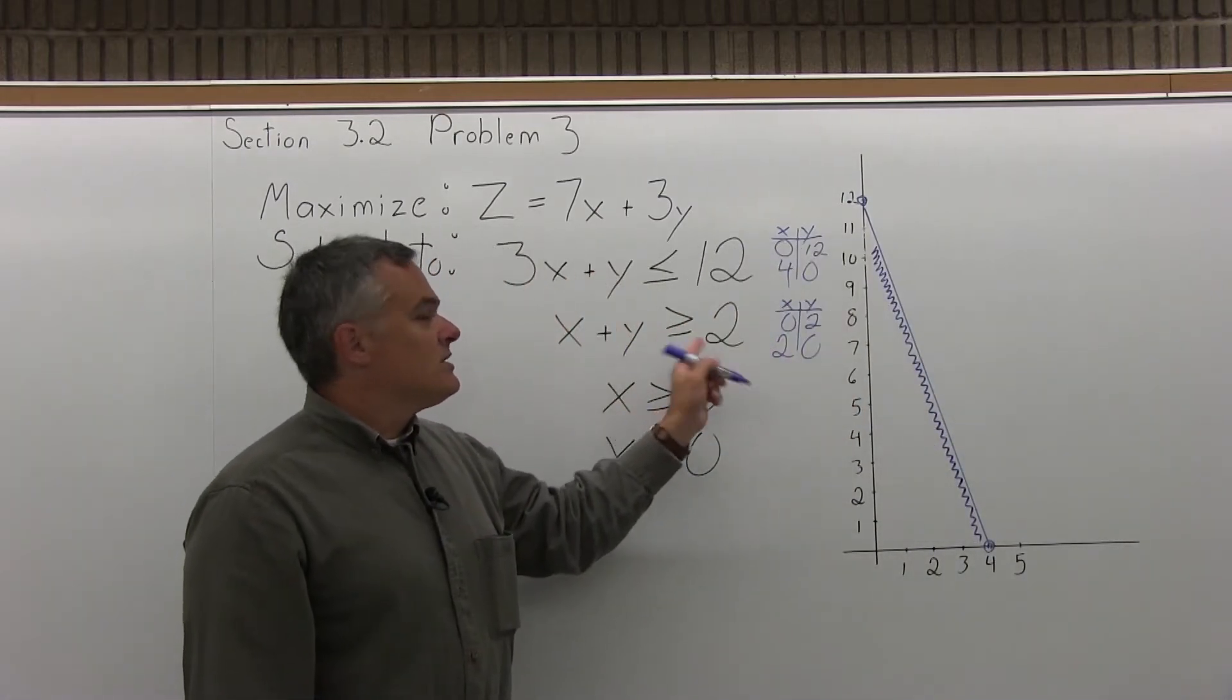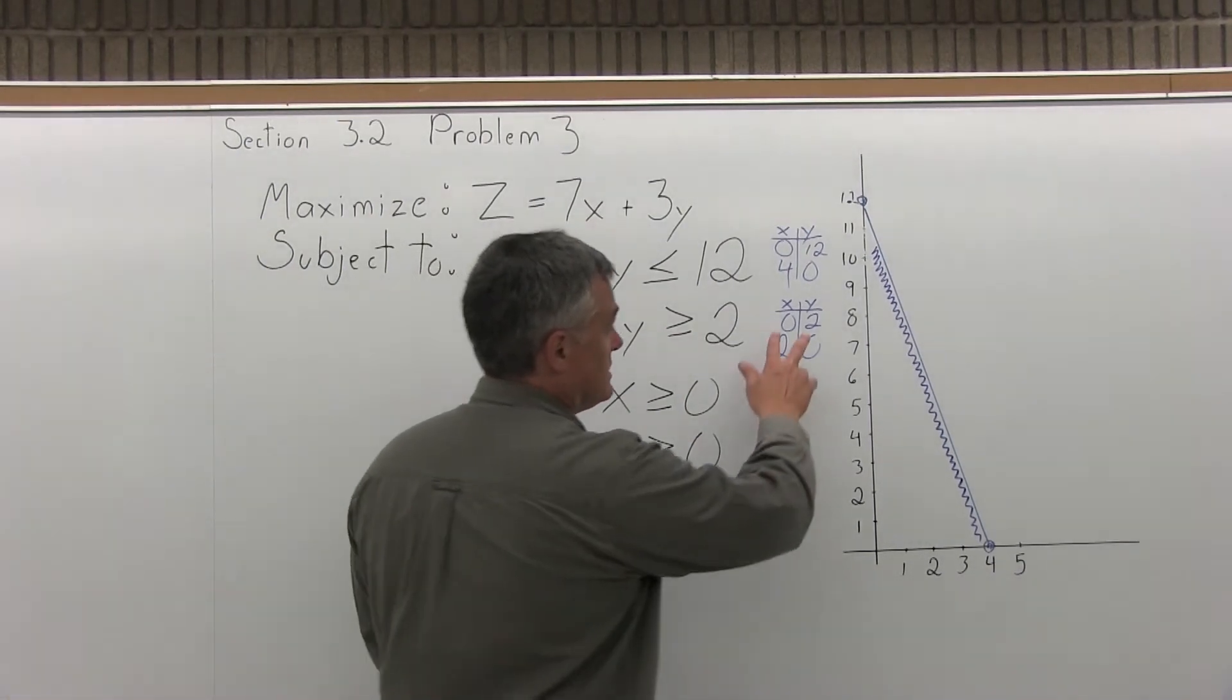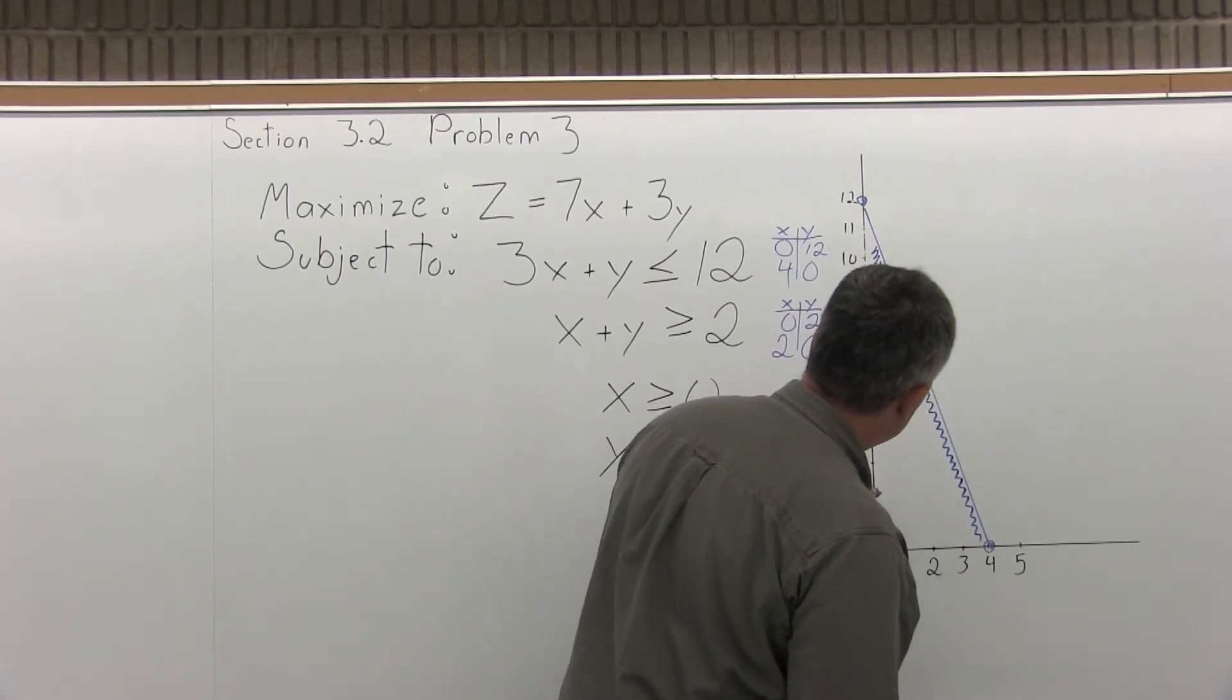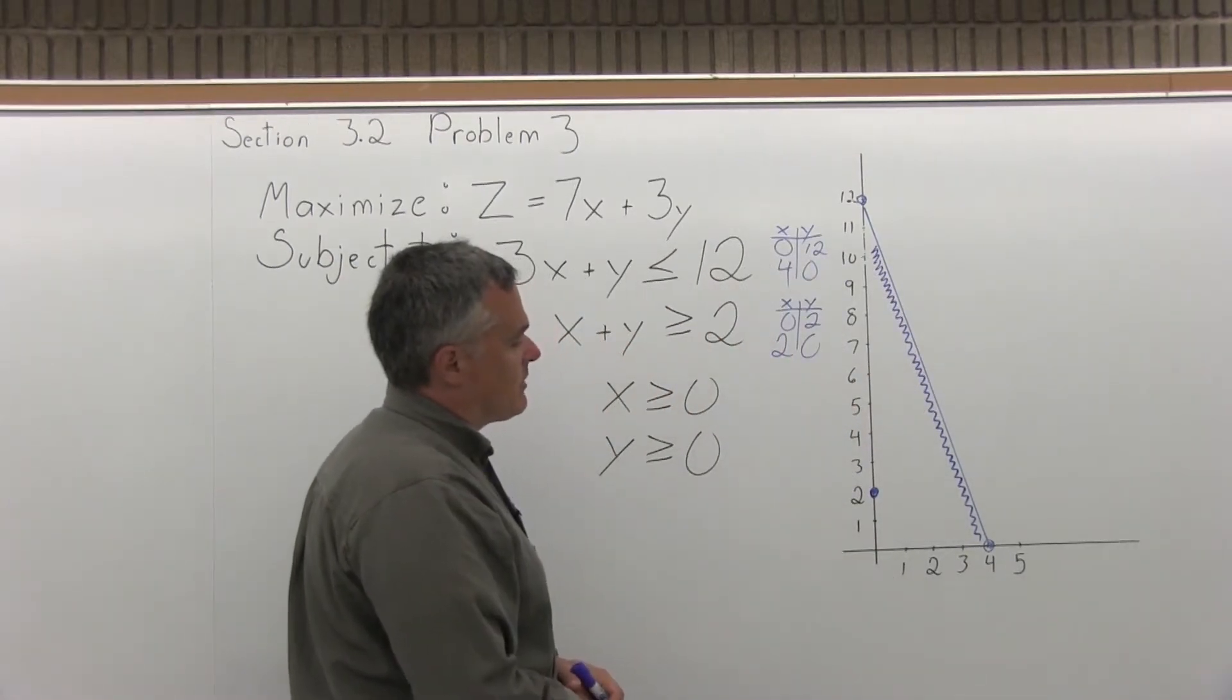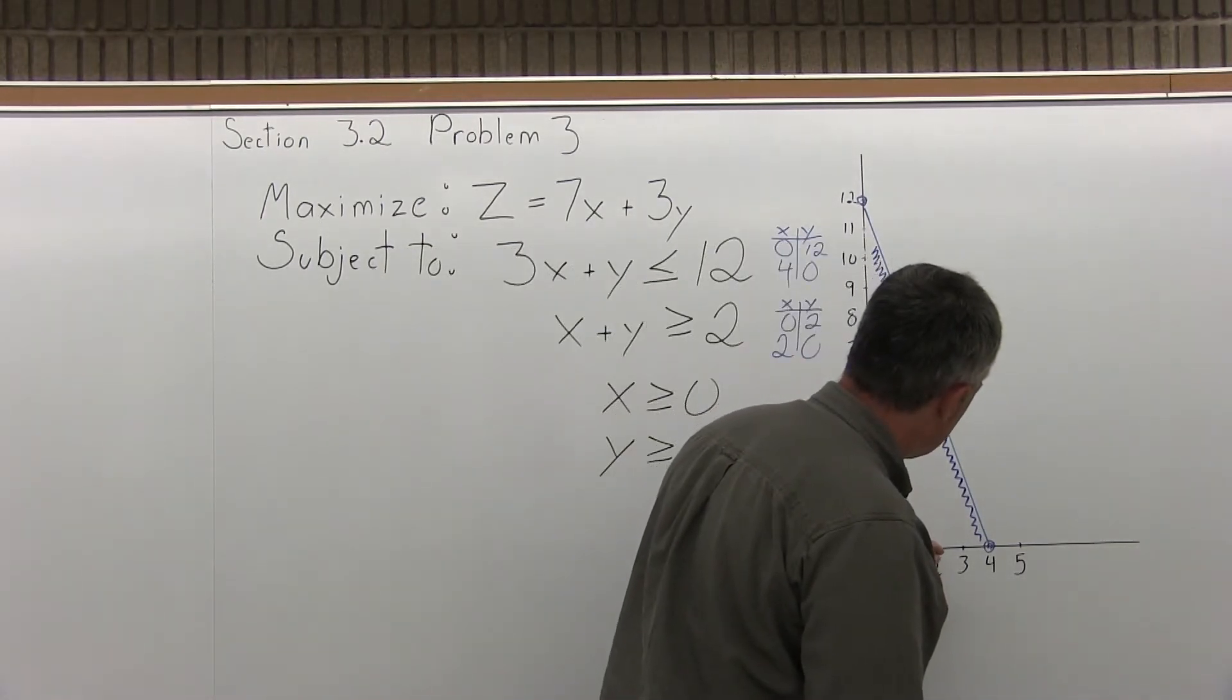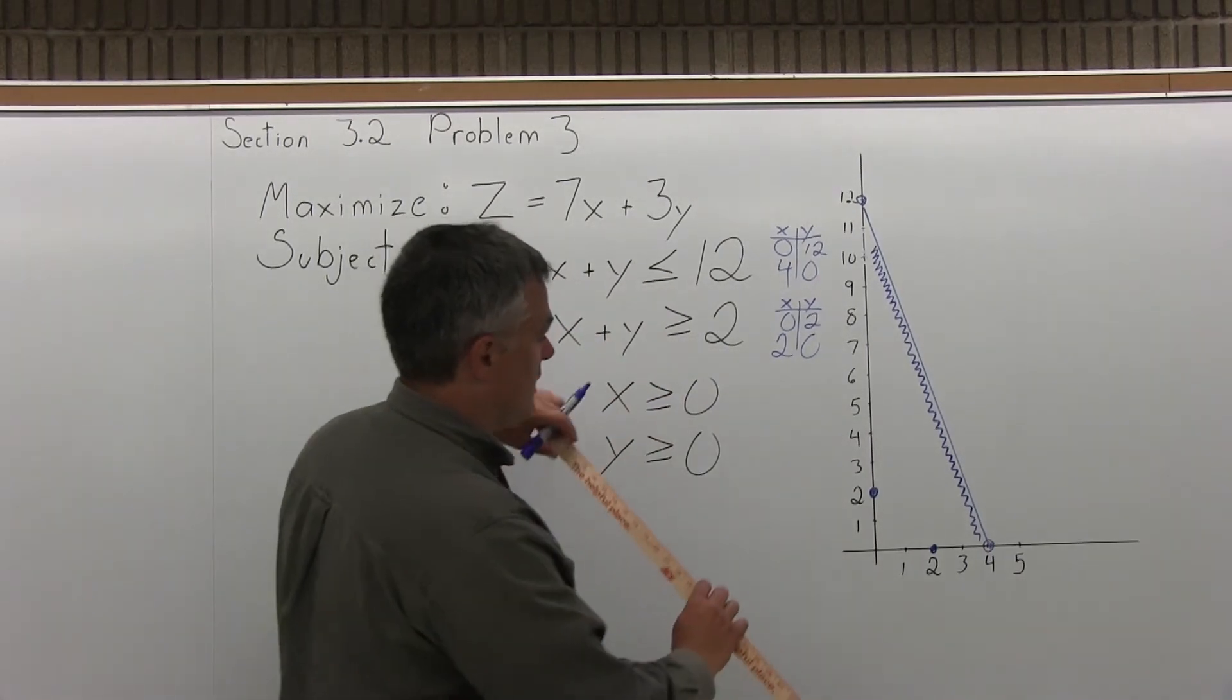The next linear inequality is the one with the 2. We had found two points for that. One of them is 0, 2. So 0, 2, over 0, up 2, would be that point on my graph. And then the other point, 2, 0, would be over 2, up 0. I'll just circle that in. I'm going to connect those two points with a straight line.